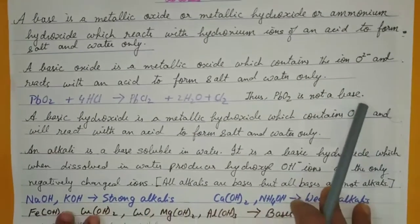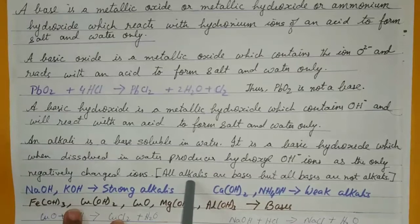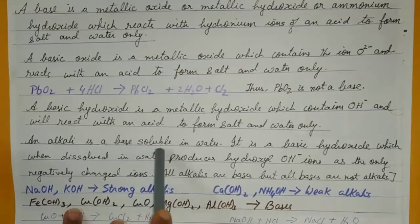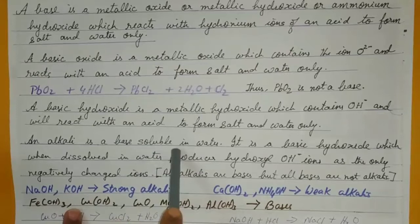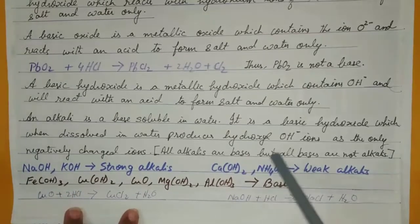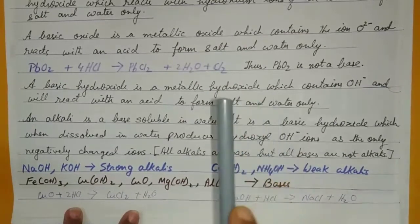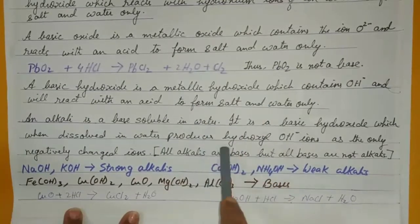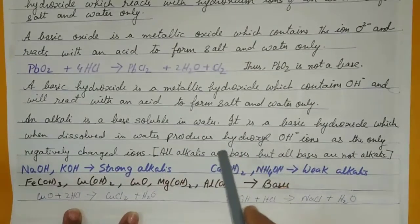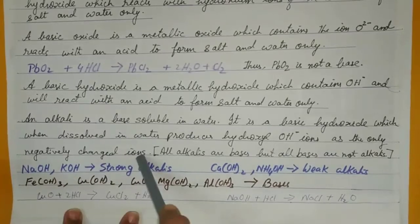Then we come to an alkali. An alkali is a base which is soluble in water. Definitely all alkalis are bases, but all bases are not alkalis — only those bases which are water soluble are alkalis. An alkali is a basic hydroxide which when dissolved in water produces a hydroxyl ion as the only negatively charged ion.